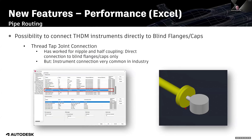The next topic is a very specific one. We are talking about the thread tab join connection, which is listed in the join settings by default. If you have an end connection with a blind flange or a cap, it was already possible to add directly a nipple or half coupling to this connection — to a blind flange or to a cap.